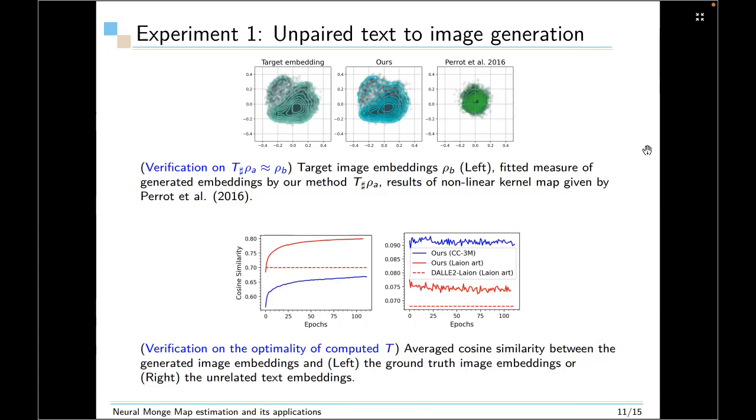So the last figure is to verify the optimality of computing the map. So on the left-hand side, we plot the average cosine similarity between the generated image embedding and the ground truth embedding. This is larger the better because if they are more similar, then this means our image embedding can better recover the ground truth image embedding. And you can see that we can generate higher cosine similarity than the baseline method DALL-E 2 line. And on the right-hand side, we plot the cosine similarity with respect to the unrelated text embeddings. This is lower the better because it is unrelated text embeddings. And you can see that all of these curves have values under 0.1. So this means all of these methods have a very low overfitting behavior.